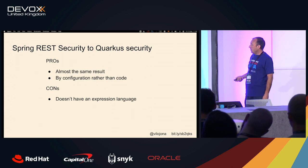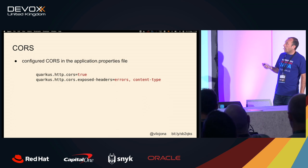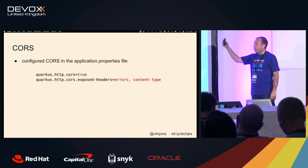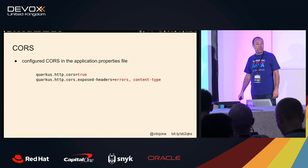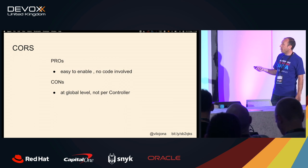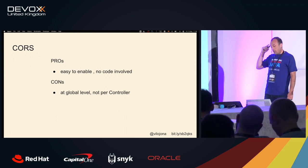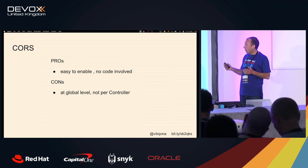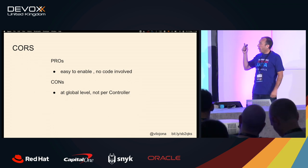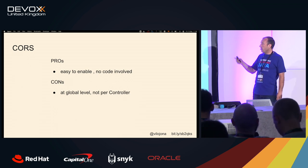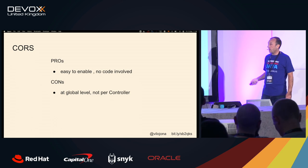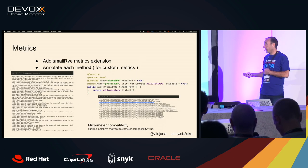Regarding cross-origin — it's a matter of adding two properties in the properties file, and everything works. Very easy. But I didn't find a way in Quarkus to configure CORS per controller as you can in Spring. In Quarkus it is at a global level in the properties. Probably there's a way, but I didn't find it.